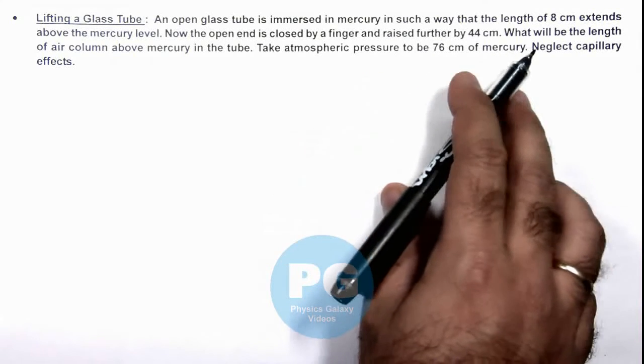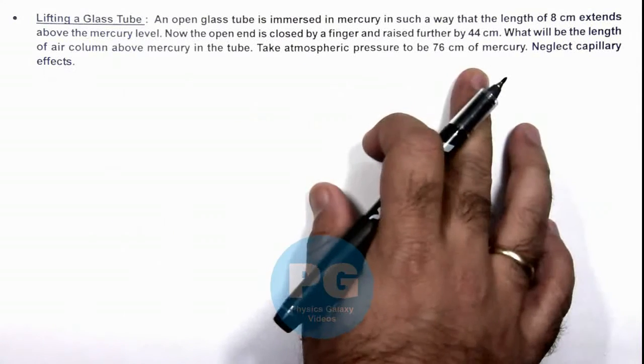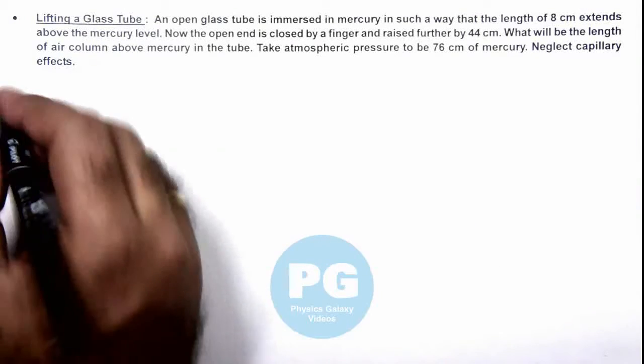And it is asking what will be the length of air column above mercury in the tube. The atmospheric pressure is given to us and capillary effects are to be neglected.